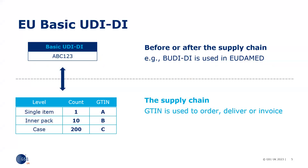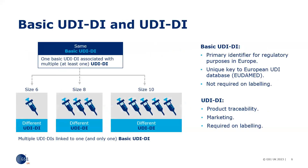Here's a graphical representation of how the basic UDIDI links to the different GTINs of the products and packaging levels within the group. Anyone searching using the GTINs will access all the other GTINs and documents about the products in the group, as they are connected by the same basic UDIDI. Here we have multiple UDIDIs for the different size syringes and different packaging configurations, all linked by the same basic UDIDI.